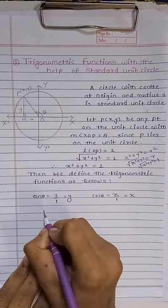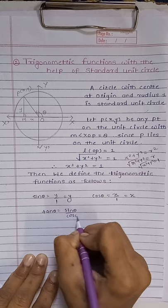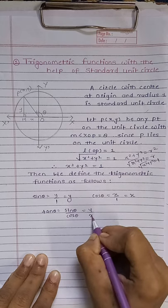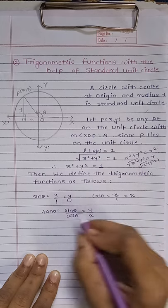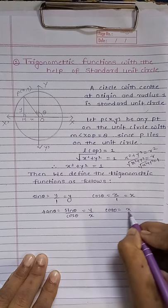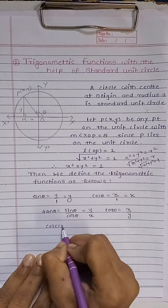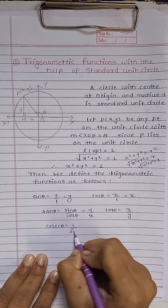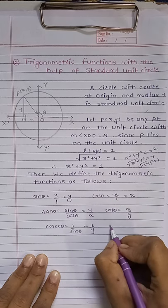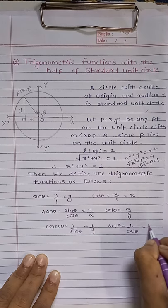Similarly, we can calculate the value of tan theta. Tan theta equals sine theta upon cosine theta. We know the value of sine theta is Y and cosine theta is X, so tan theta equals Y upon X. Similarly, cot theta equals X upon Y, which is the reciprocal of tan theta. Now, cosec theta means 1 upon sine theta, and putting the value of sine theta we get 1 upon Y. And sec theta means 1 upon cosine theta, which gives 1 upon X.